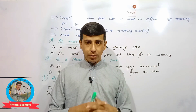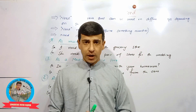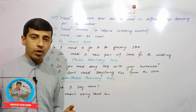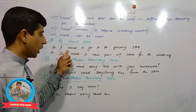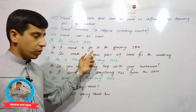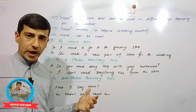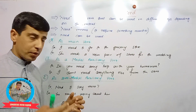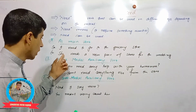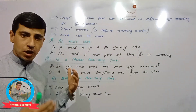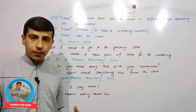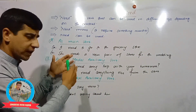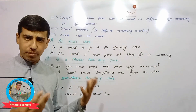Need can be used, number A, as a main verb. For example, 'I need to go to the grocery store.' In this sentence, need is used as a main verb. And number two, 'She needs a new pair of shoes for the wedding.' So, needs is again used as a main verb.